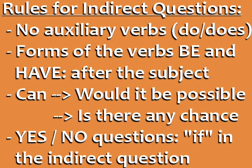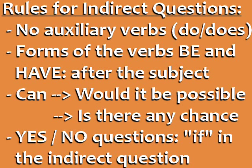Let's review the rules for indirect questions. Indirect questions have no auxiliary verbs like do, does, or did. In indirect questions, forms of the verbs 'be' and 'have' come after the subject. For questions beginning with the word 'can,' we change it to 'would it be possible' or 'is there any chance' in the indirect question.